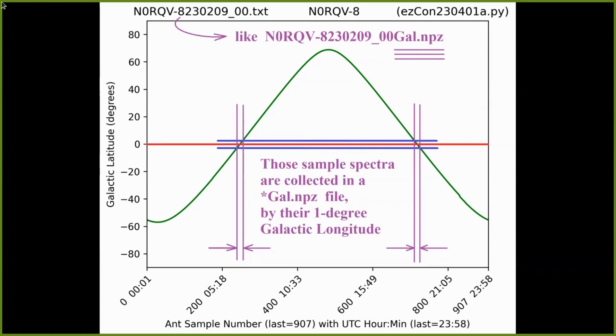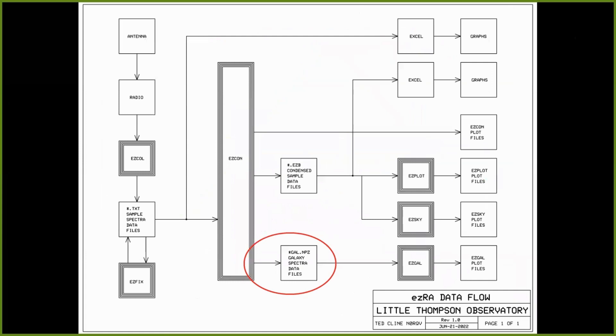In that case, only those samples within plus or minus three degrees are selected and collected in the output file. They are sorted by one degree galactic longitudes. For each galactic longitude, each spectra becomes an average of the collected samples. If the last data file had a certain name, we use that certain name and add gal for galaxy and dot NPZ, which can then be read by EasyGal. We'll talk about that in the next video.